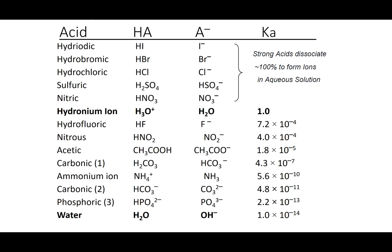So, on your Ka table, what I'm going to do is I'm going to give you the name of the acid. I'm going to give you its molecular formula. And I'm going to tell you what the conjugate base is. Now, in one of the last columns, you'll see the Ka value.